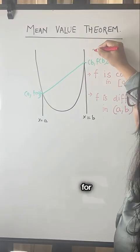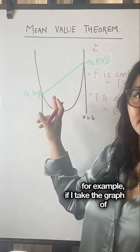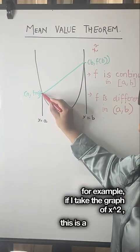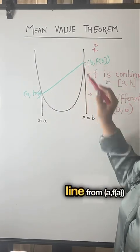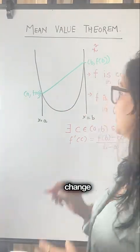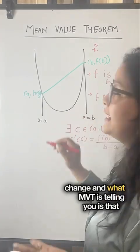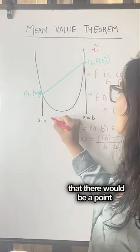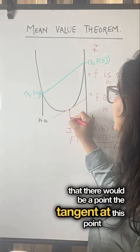For example, if I take the graph of y = x², this is a secant line from (a, f(a)) to (b, f(b)). The secant line shows the average change, and what MVT is telling you is that it is guaranteeing that there would be a point where a tangent at this point will be parallel to the secant, and that means the rate of change is the same.